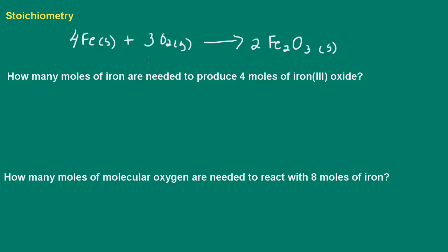In stoichiometry, we relate the relative quantities of reactants and products. A simple example is for a car: if you manufacture cars, you need four tires and one steering wheel. So the stoichiometric ratio would be 1 to 4 — that's one steering wheel to four tires. That is what we would term the stoichiometric ratio.